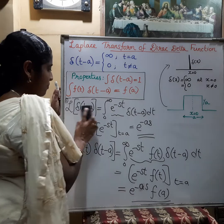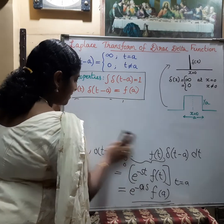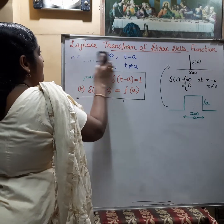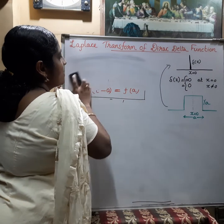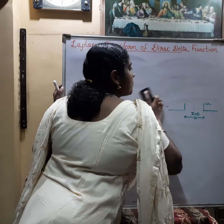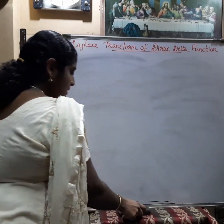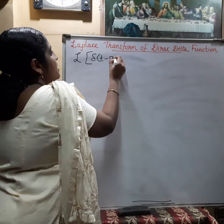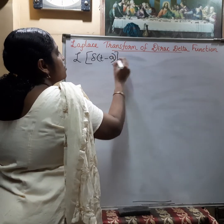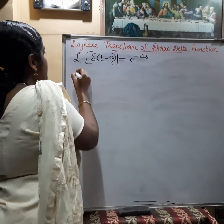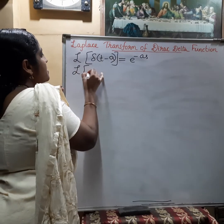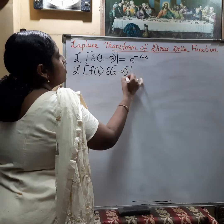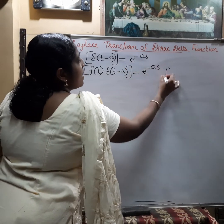To summarize, we have studied that the Laplace transform of δ(t−a) is equal to e^(−as), and the Laplace transform of f(t)·δ(t−a) is equal to e^(−as)·f(a). Using these formulas, we can solve problems involving the Laplace transform of Dirac delta functions.